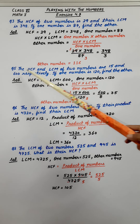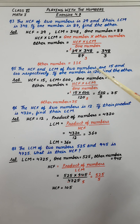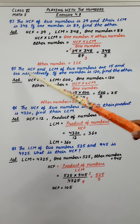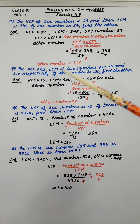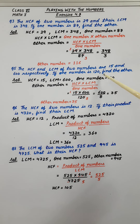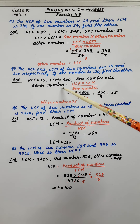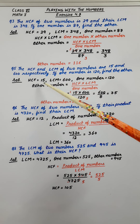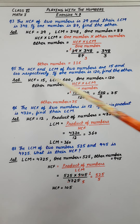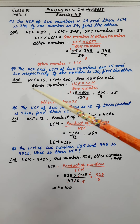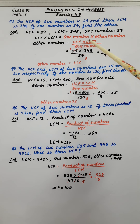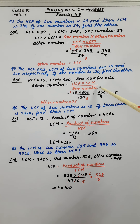Coming to the 5th question: the HCF and LCM of 2 numbers are 15 and 600 respectively. If one number is 120, find the other. In the same way as we solved the previous question, we have to find the other number using the same formula: HCF into LCM upon one number.